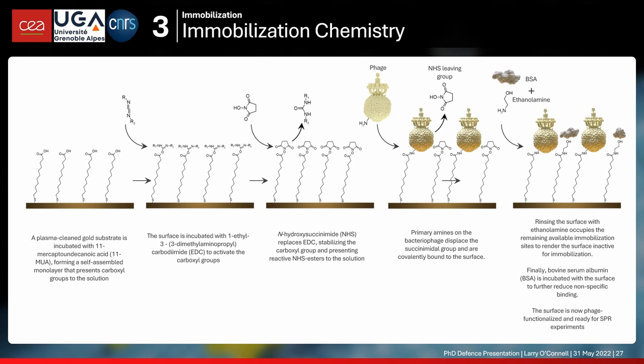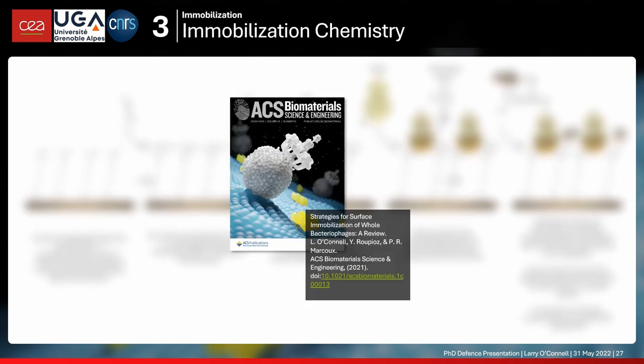When you incubate the phages with the surface, they supplant the NHS — which becomes a leaving group and is rinsed away — and now you have bacteriophages covalently immobilized to the surface. To limit non-specific binding, you can saturate the surface using ethanolamine, which has a very high diffusion constant and abundant primary amines. BSA is also used again to block the surface against non-specific binding. This was the fruit of a literature review we published concerning strategies for surface immobilization of bacteriophage particles.